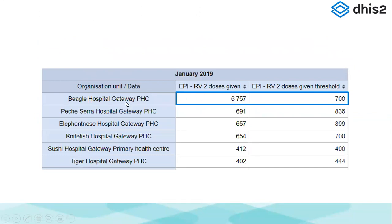For example, suppose for Bagel Hospital we see that RV2 doses given — rotavirus doses given to children — is 6757, while our threshold set up based on the last 11 months is 700. We can say that this value exceeds the threshold and we need to go back and check this data. It looks like there may be an additional digit entered by mistake. This helps the user identify manual data entry errors and correct them.